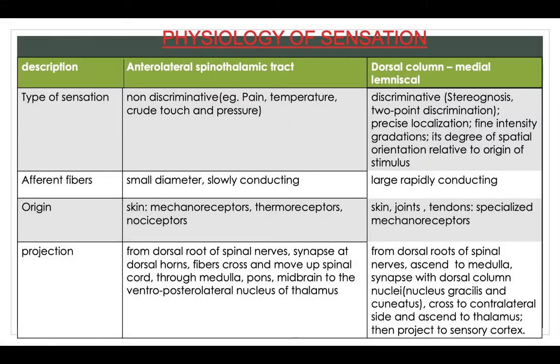Now let's talk about the physiology of sensation. There are two important ascending tracts: the anterolateral spinothalamic tract and the dorsal column. In the anterolateral spinothalamic tract, sensation is non-discriminative — for example, pain, temperature, crude touch and pressure.